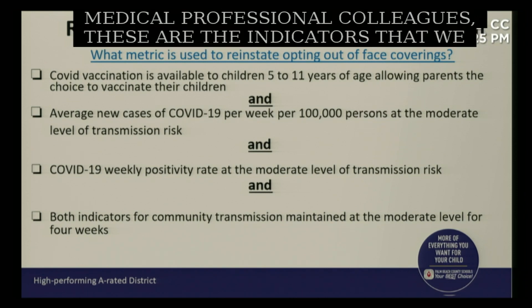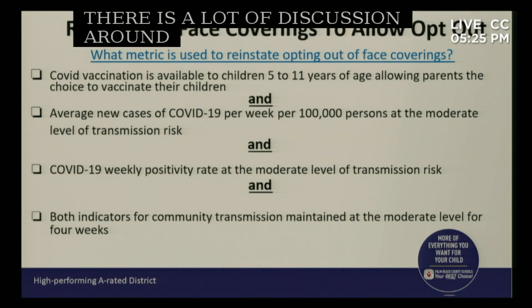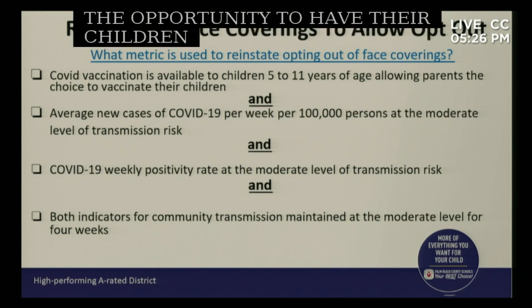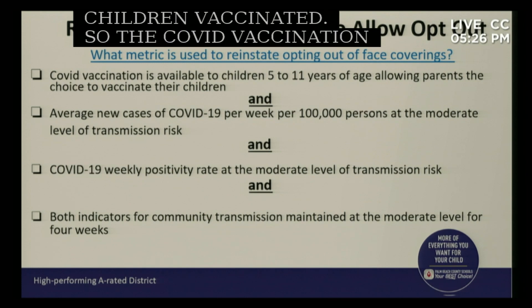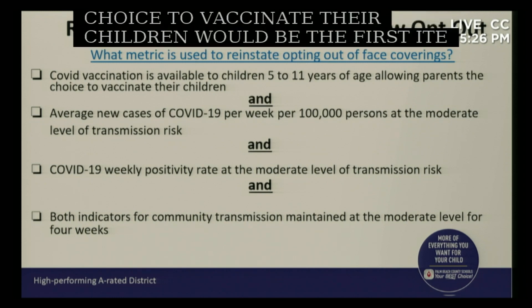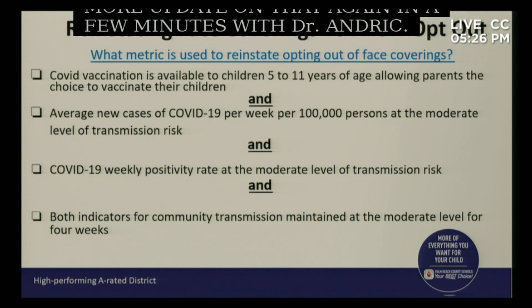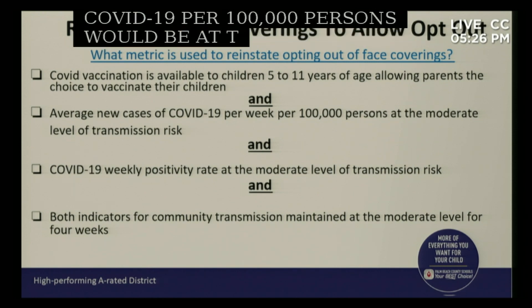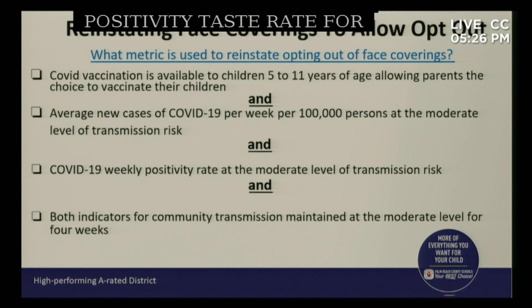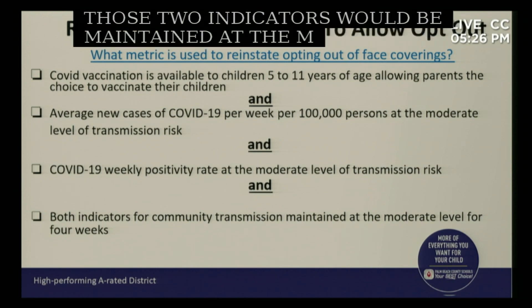Based on that information and working closely with our medical professional colleagues, these are the indicators we'll use to reinstate face coverings and move back to opt-out. There's a lot of discussion around vaccination, particularly for parents of children ages 5 to 11 who haven't had the opportunity to vaccinate their children. The COVID vaccination becoming available for children ages 5 to 11 and allowing parents that choice would be the first item in going back to opt-out. The average new cases of COVID-19 per 100,000 would need to be at the moderate level of transmission risk, and the positivity rate would also need to be at the moderate level.